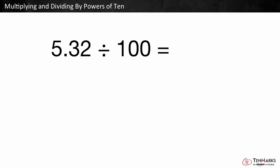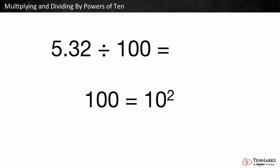Let's try 5 and 32 hundredths divided by 100. When dividing by powers of 10, each digit moves one place to the right for each 10 you divide by. 100 is the same as 10 times 10, or 10 to the second power, so we shift the digits to the right two times. This means 5 and 32 hundredths divided by 100 is equal to 532 ten-thousandths. This makes sense because our quotient is smaller by two place values.